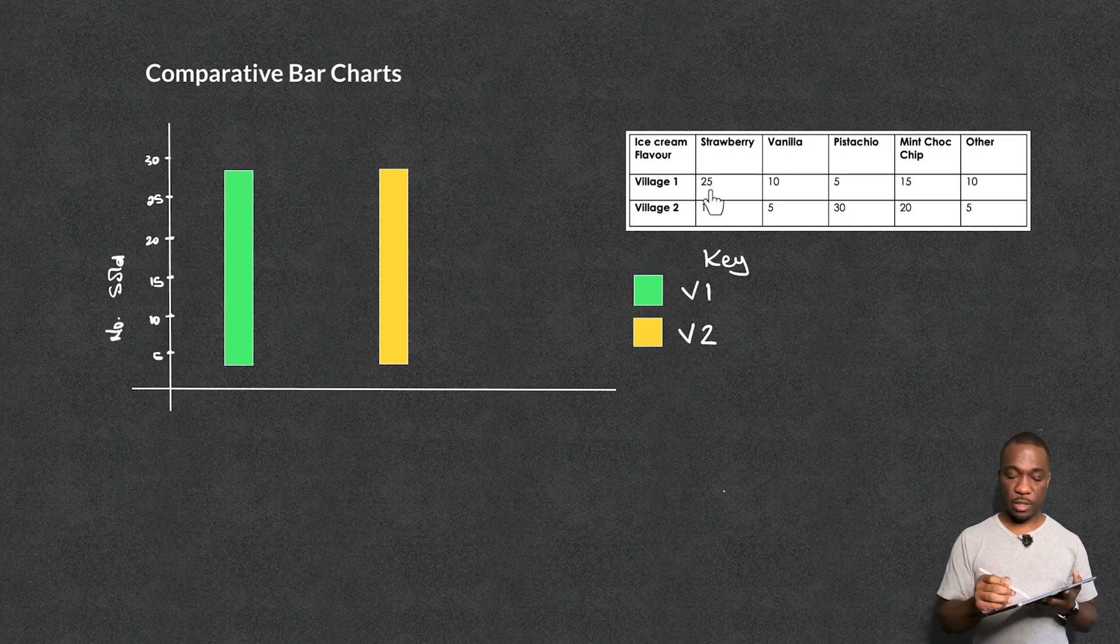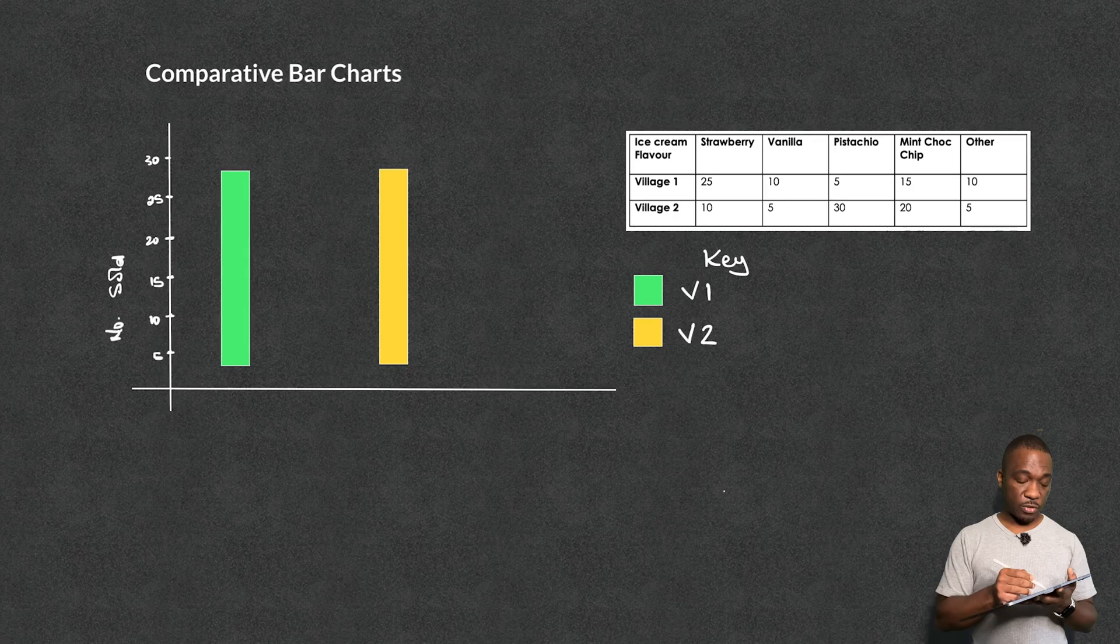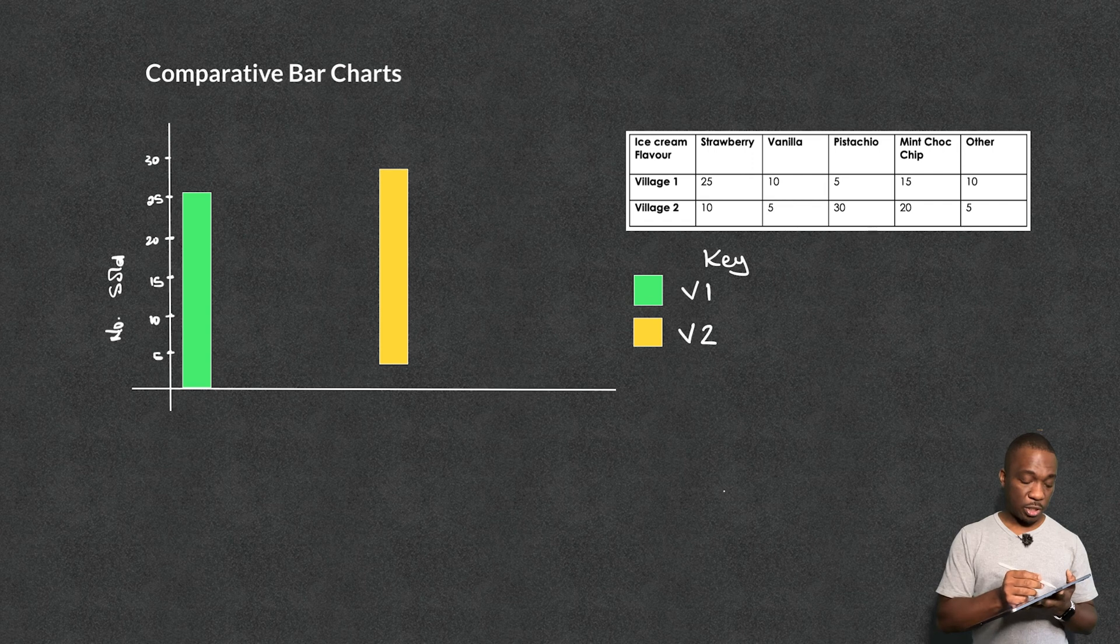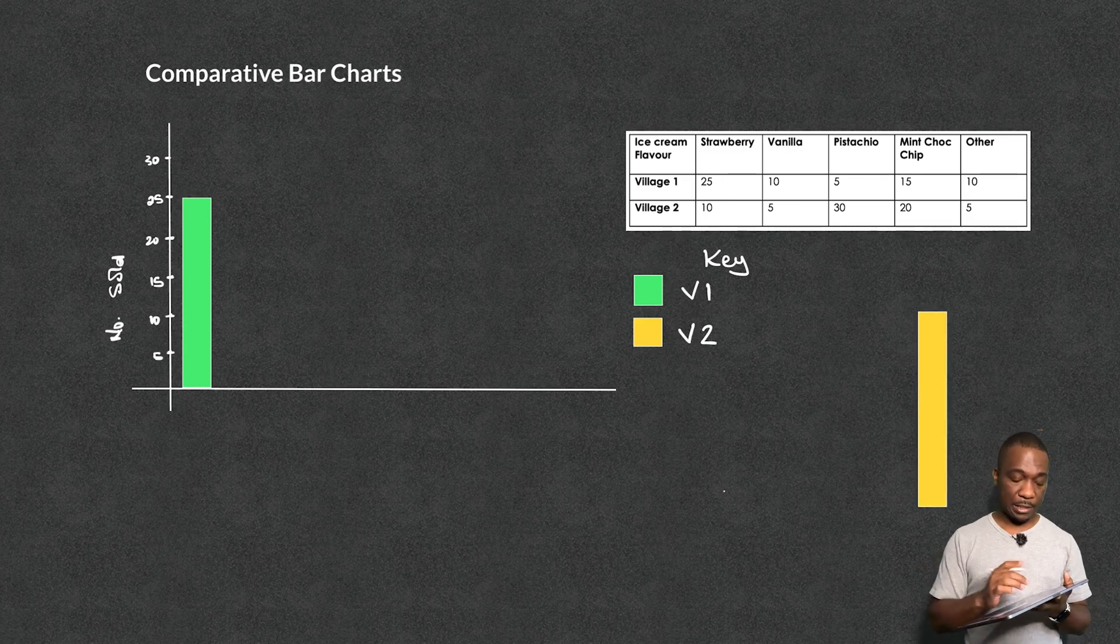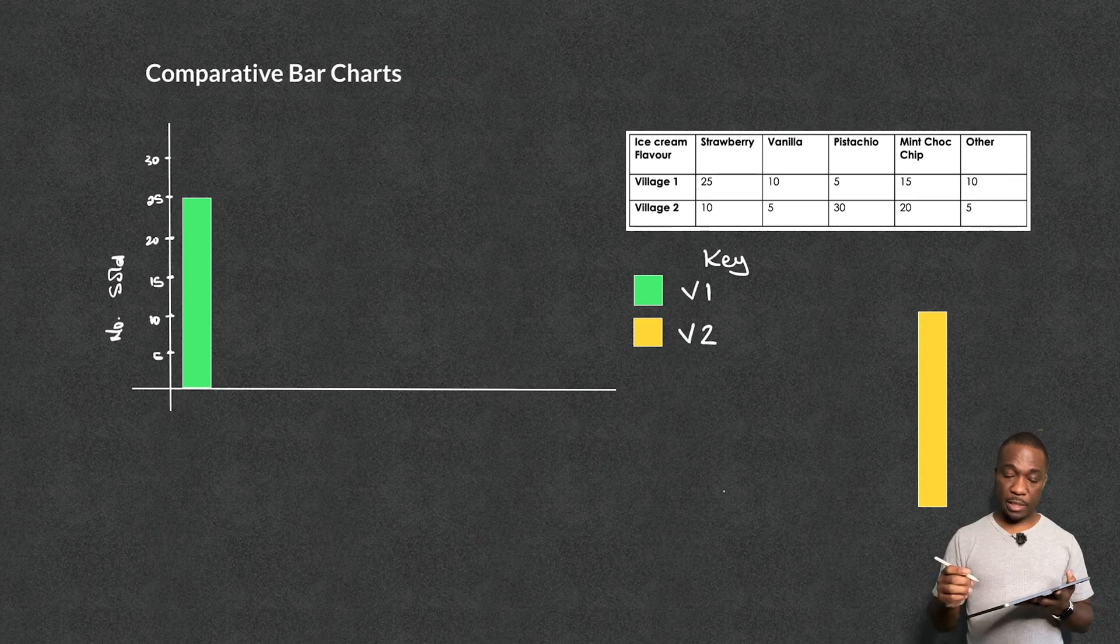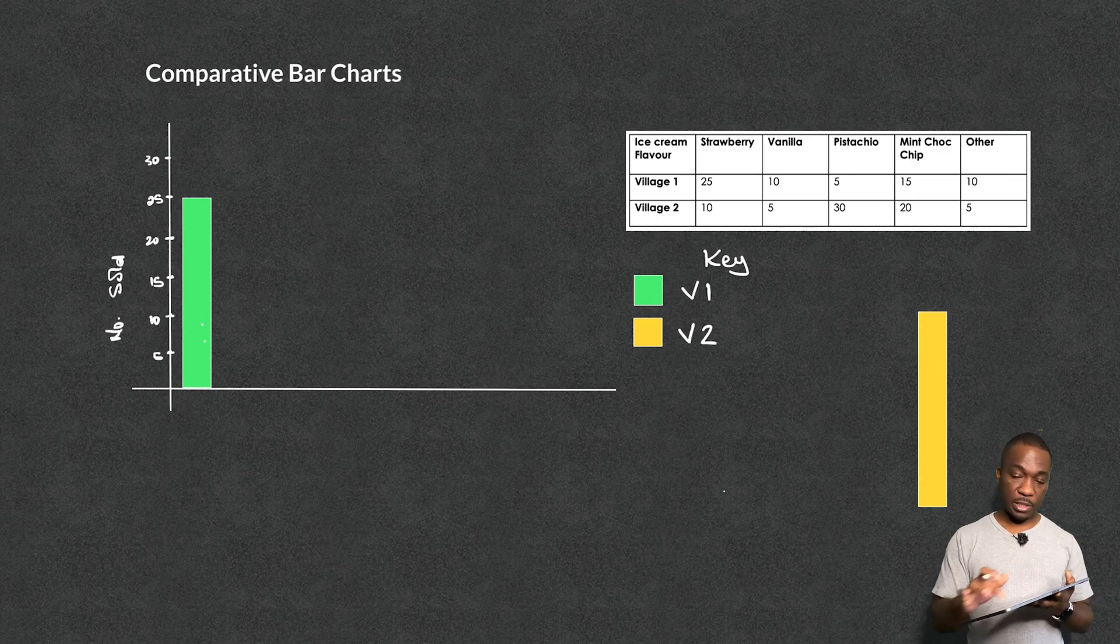I tend to sell about 25 strawberry ice creams in that village. So I'm just going to put vanilla, and vanilla don't really sell that much. So I'm only going to sell 10 of those. So for that one, I'm going to duplicate and then I'm going to bring this one over here, leave a little bit of space.